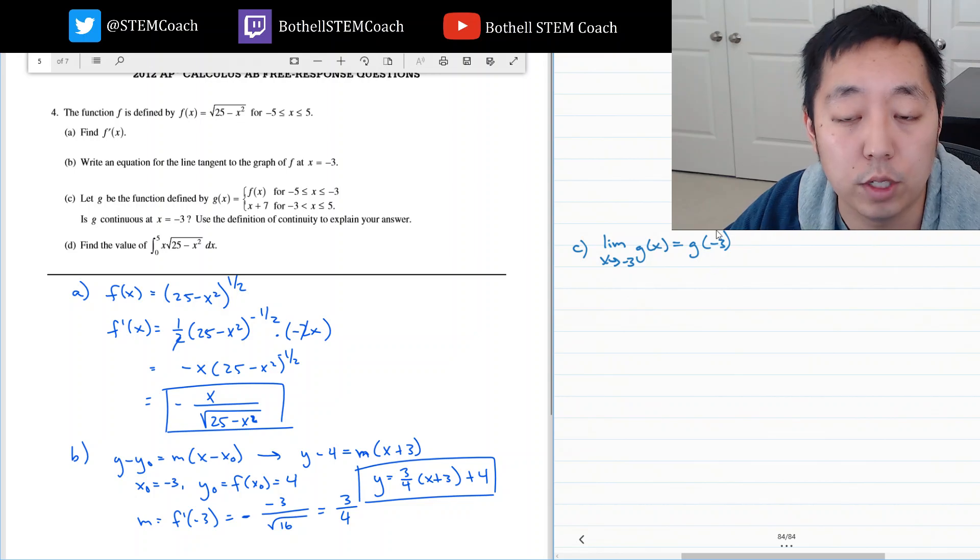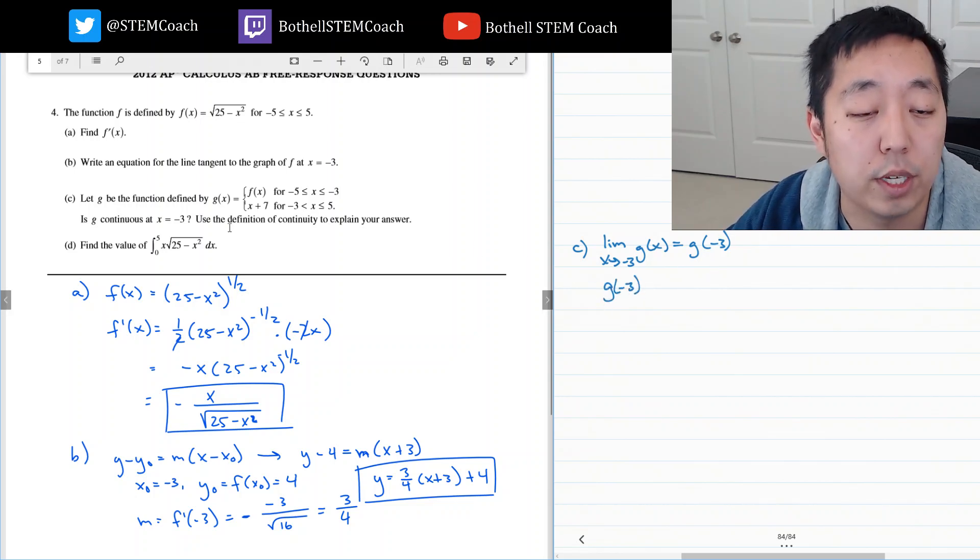So let's do a few things. First, what's g of negative 3? g of negative 3, I use this condition. It becomes equal to f of negative 3. And that's equal to what we said was 4, right? Because we did that before.